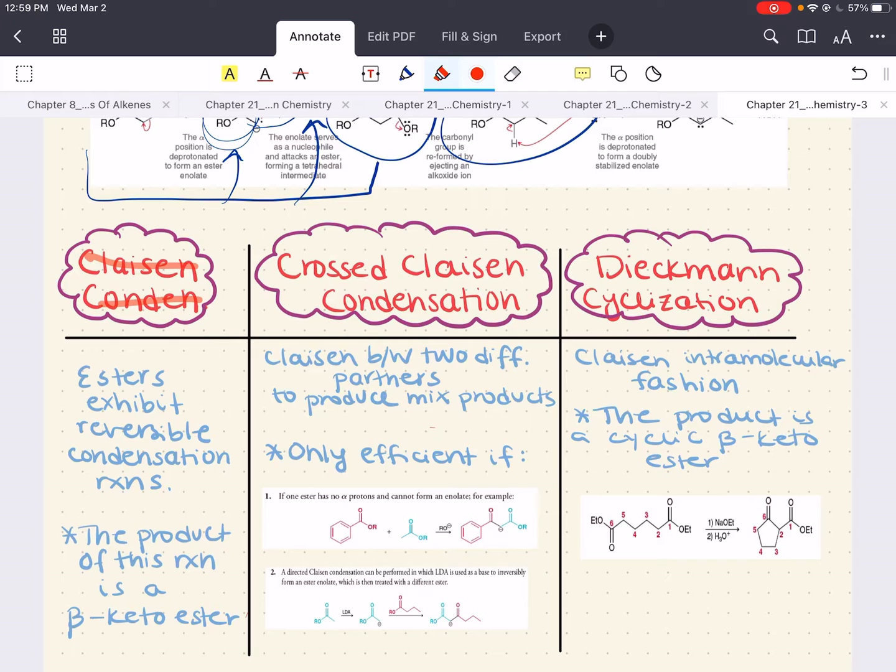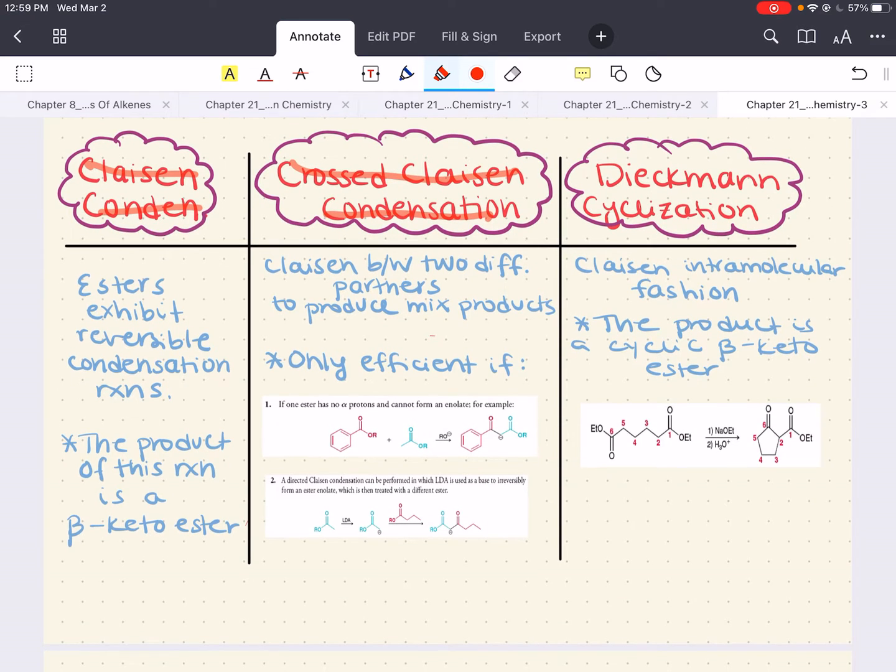Now, just like we talked about cross-aldol reaction, we want to talk about cross-Claisen condensation reactions. Here, Claisen condensation reactions can occur between two different partners, and the result is a mix of products that happens via cross-Claisen condensation. Now, it's only efficient if one of the two following criteria are met.